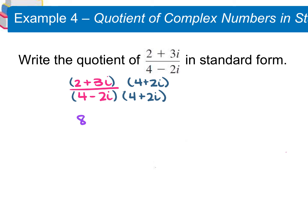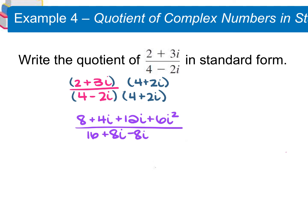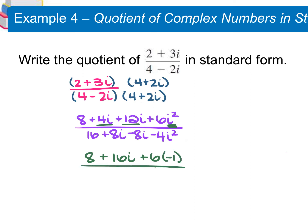So 2 times 4 up top gives us 8. The 2 times 2i is 4i. 3i times 4 is 12i. And 3i times 2i is 6i squared. This is all over your 4 times 4, which is 16. 4 times 2i is 8i. The negative 2i times 4 is negative 8i. And 2i times negative 2i is negative 4i squared. From here we simplify: combining like terms up top gives 8 plus 16i plus 6. That i squared is negative 1, so we multiply that 6 by negative 1. On the bottom, the 8i's cancel, leaving 16 minus 4 times i squared, which is negative 1.